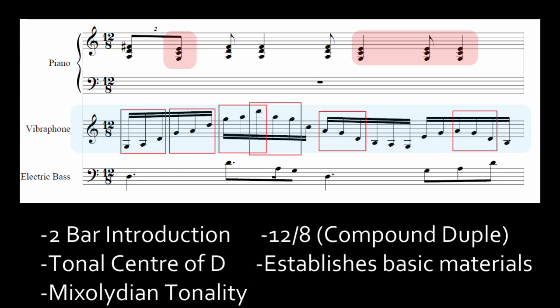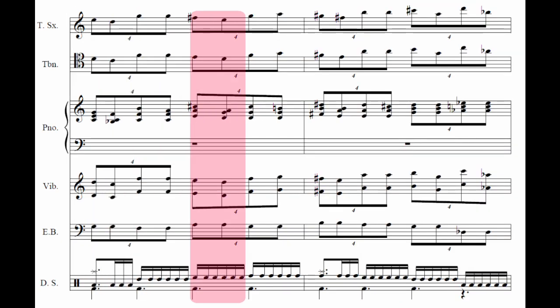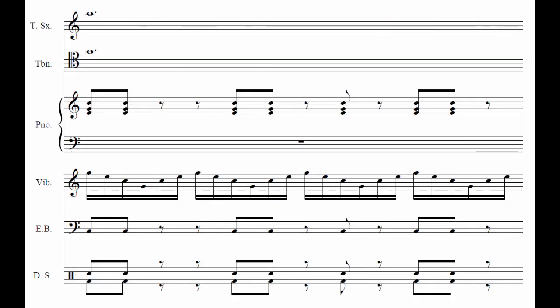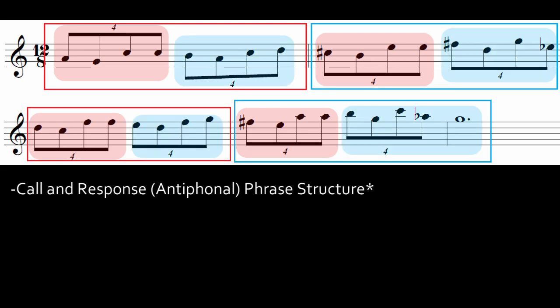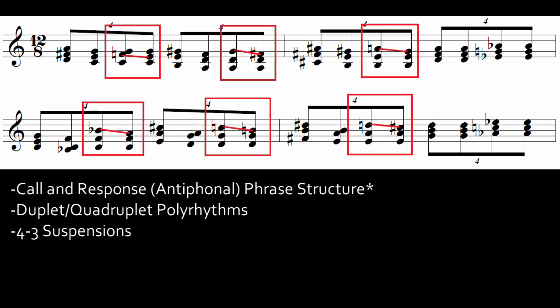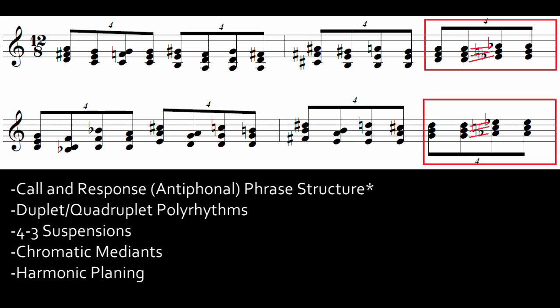The main statement of the first theme follows this. This consists of four pairs of call and response phrases, each pair lasting one bar. The melody utilizes duplets, creating a two-against-three polyrhythm. Harmony is triadic and the motion is driven by 4-3 suspensions. It makes use of chromatic mediants, transposing each phrase up a major third from the last. Each second phrase of every second pair prepares the subsequent phrase by transforming the previous chord by a half step. No clear tonal center is retained due to the frequent modulations.